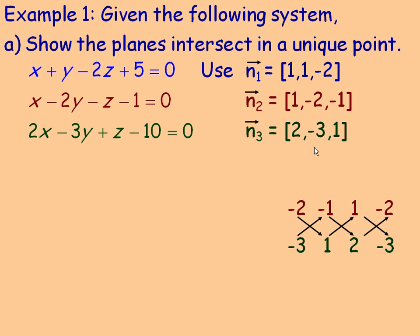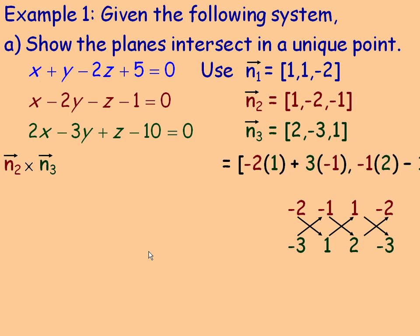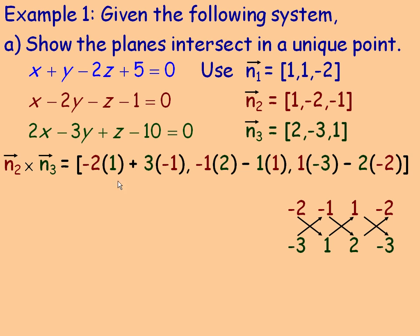I'm going to take the cross product of the second and third normal vectors. So n2 is (-2, -1, 1) and n3 is (2, -3, 1). Drawing the grid, the x-component is (-2)(1) minus (-3)(-1), which is -2 plus (-3) = -5. The y-component is (-1)(2) minus (1)(1) = -2 - 1 = -3. The z-component is (1)(-3) minus (2)(-2) = -3 + 4 = 1. So n2 × n3 = (-5, -3, 1).